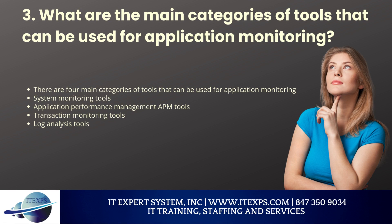Question 3: What are the main categories of tools that can be used for application monitoring? There are four main categories: first, system monitoring tools, which monitor the overall performance of the system including CPU usage, memory usage, and network activity; second, application performance management (APM) tools, which focus on the performance of specific applications and provide detailed information on bottlenecks; third, transaction monitoring tools, which track the performance of specific transactions such as a user login or a purchase on an e-commerce site; and fourth, log analysis tools, which parse log files generated by the application and can be used to troubleshoot performance issues or identify potential security threats.